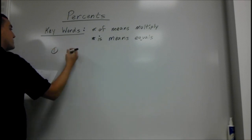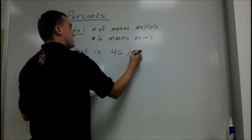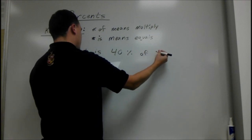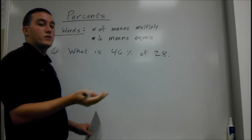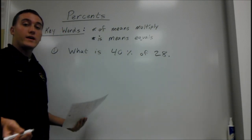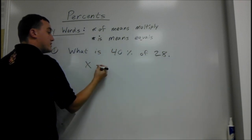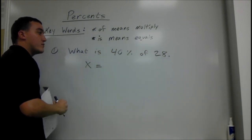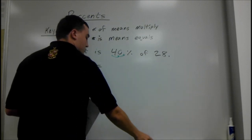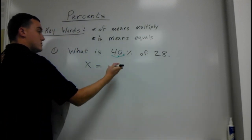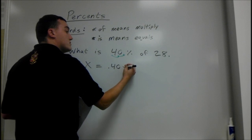First of all, what is 40% of 28? What is going to be our variable, or our letter? We can call it x or n, whatever you want to call it. I'm going to call it x. Is means equals, so x equals 40%. And to make 40% a decimal, we move the decimal over two places — one, two — so that is .40. You could just use .4, that's okay too. Of means times 28.